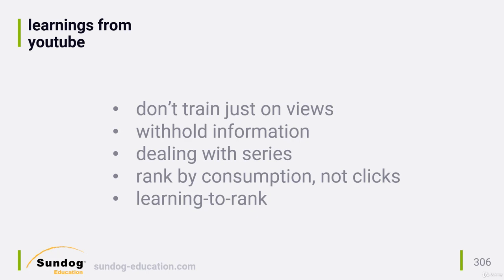Here are some key takeaways from the paper as a whole. First, don't rely on just view data when training a recommender system. The folks at YouTube came up with as many signals as they could from the user's past behavior and attributes, and for some features also fed these in as squares and square roots in case there were non-linear relationships to be found. View data alone is too easily gamed and rewards clickbait videos. They also withhold some information to prevent overfitting — for example, predicting a user will watch a Taylor Swift music video just because they searched for Taylor Swift isn't helpful. They would have found that video from search results anyway, so they discard sequence information and obscure certain search data to prevent that sort of overfitting.